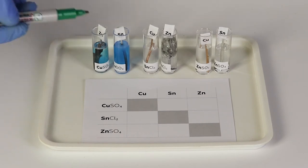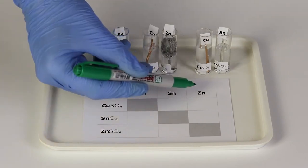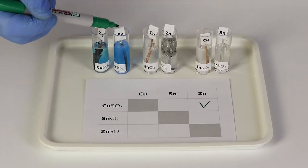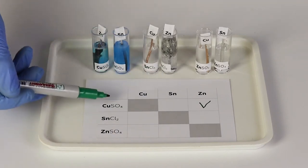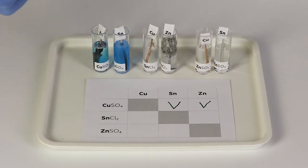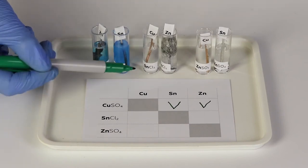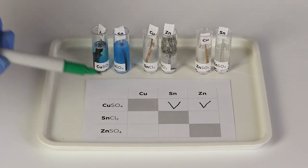You will observe that zinc and tin react with the solution of copper sulfate. They form zinc and tin sulfates and metallic copper. You will observe that zinc reacts with the solution of tin chloride and forms zinc chloride and metallic tin.